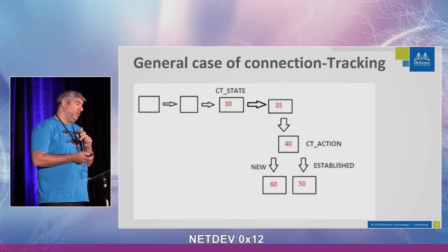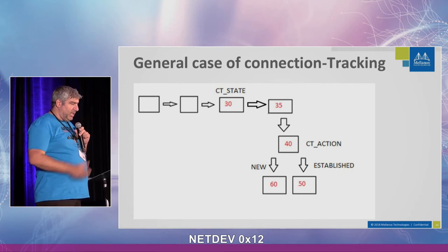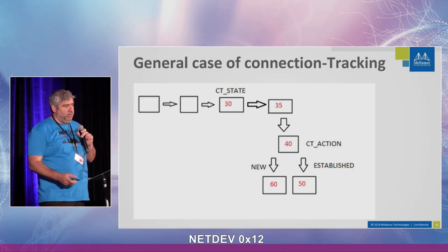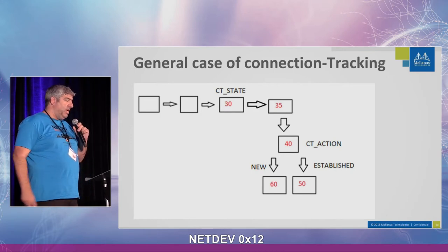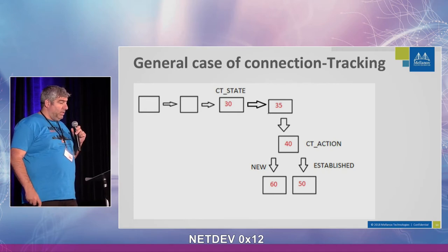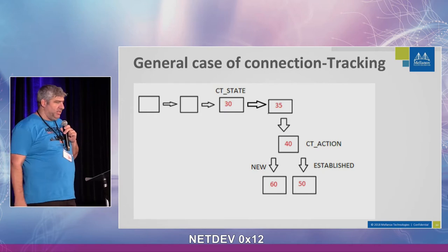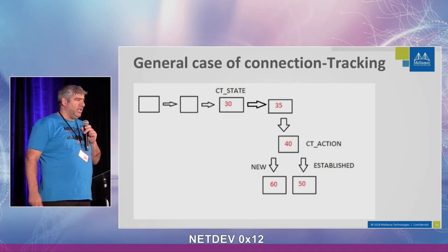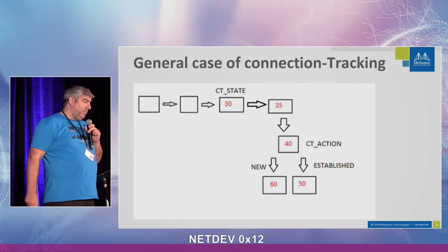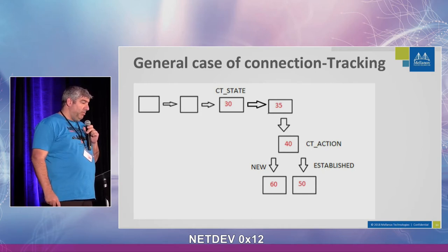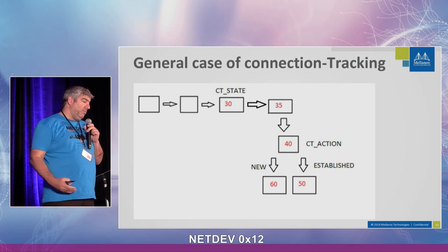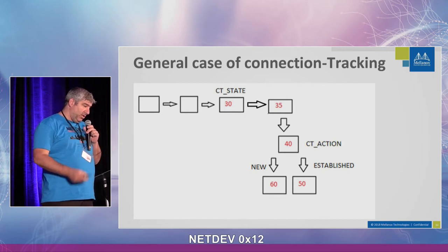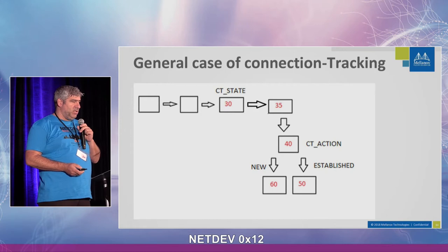Now we want to take it to the hardware. We want to take the general case of connection tracking, because people can do connection tracking, then another connection tracking, and do some branching in the tables. The Mellanox hardware is also very flexible and can support that. For example, in the upper table we're going to connection tracking through a few tables, and continuing. Below, there is a split for what you want to do with a new connection versus an established connection. This is what the customer wanted.